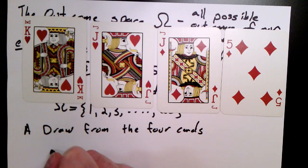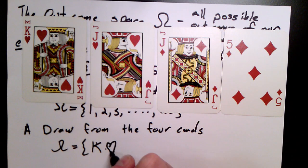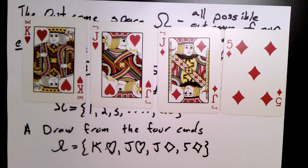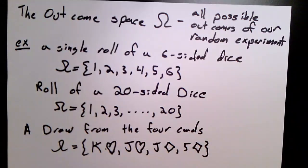So we'll write the outcome space as the symbol K with a heart, J with a heart, J with a diamond, and five with a diamond. So these set of four symbols defines our outcome space.